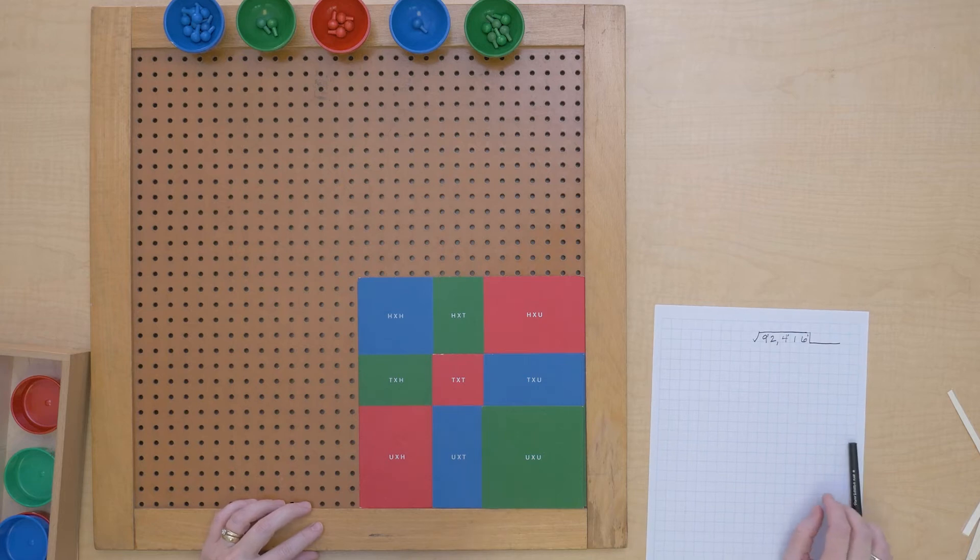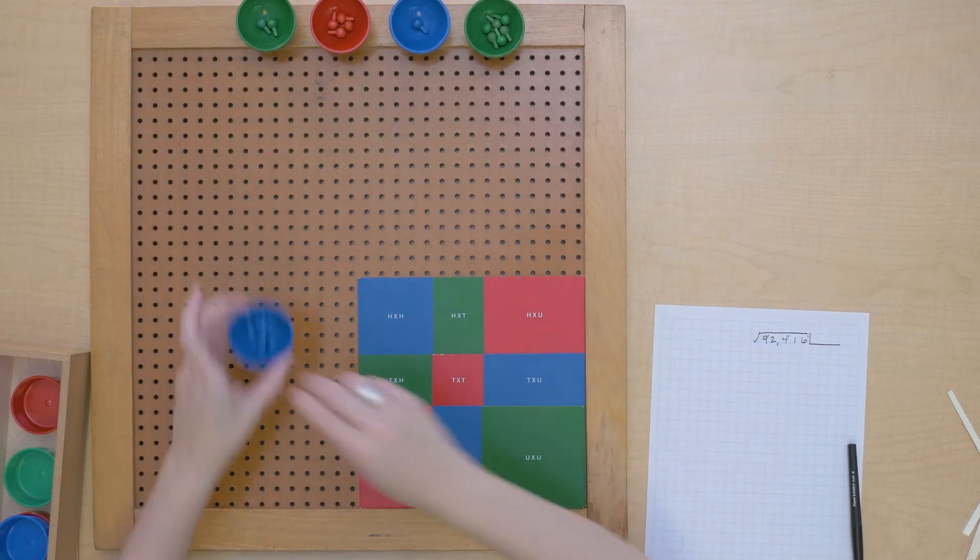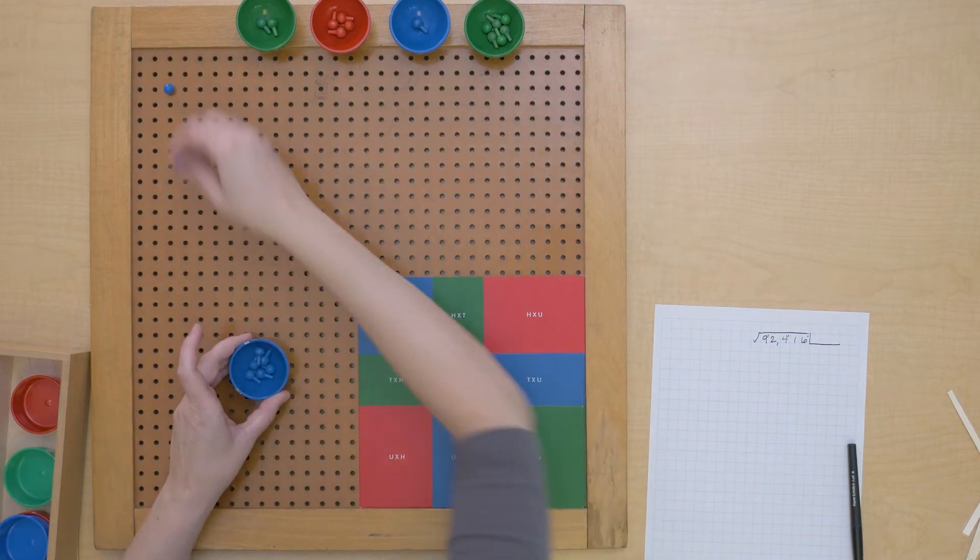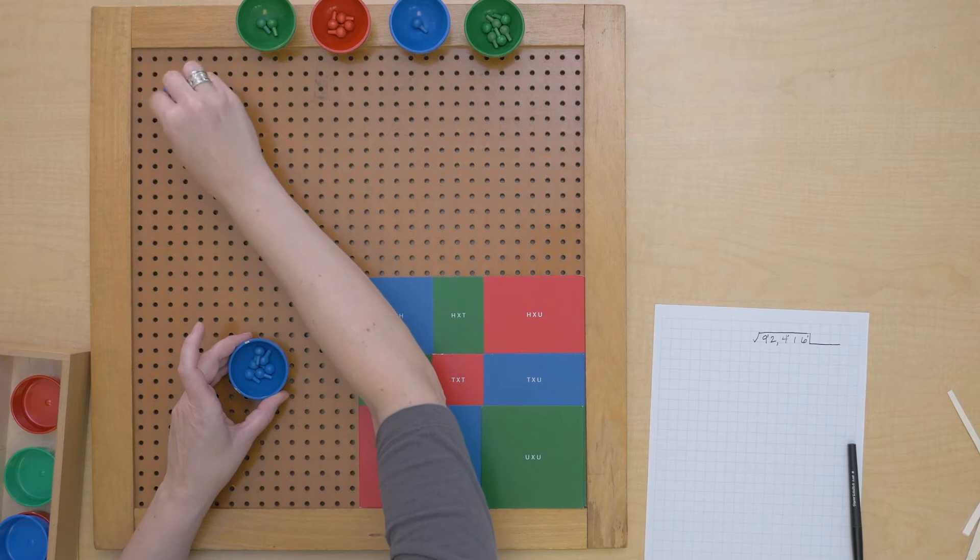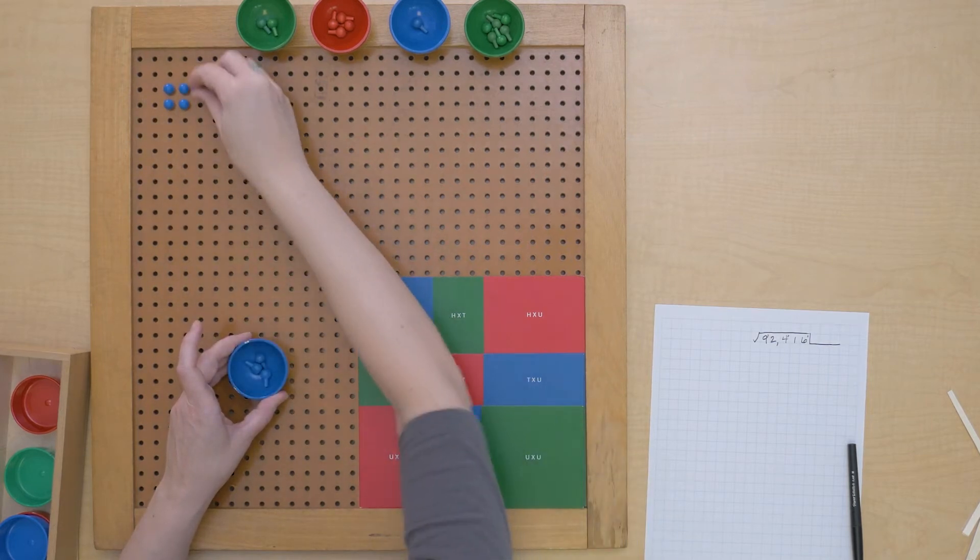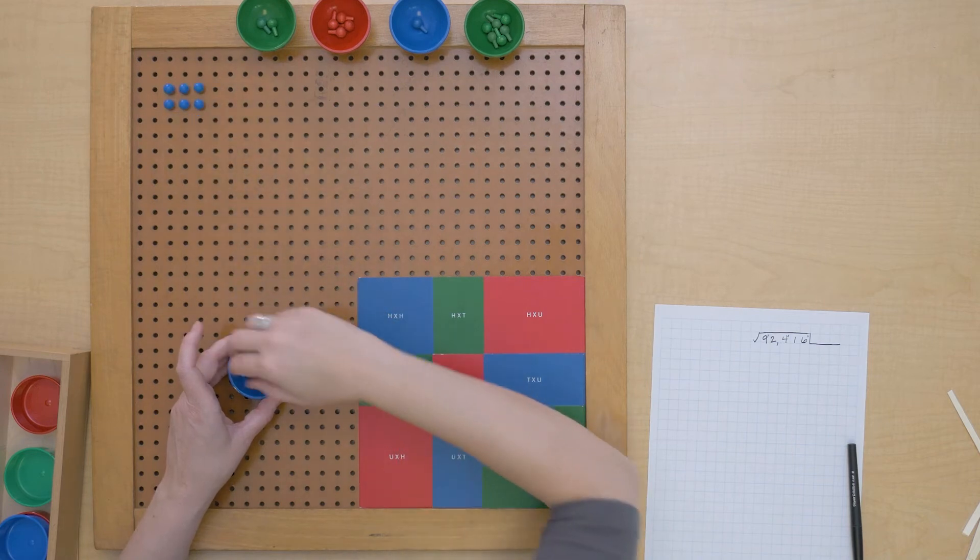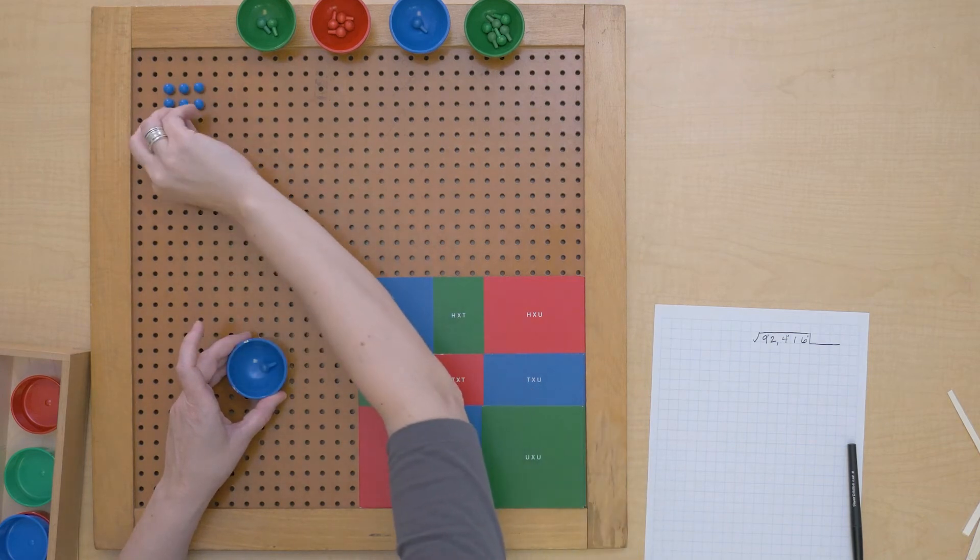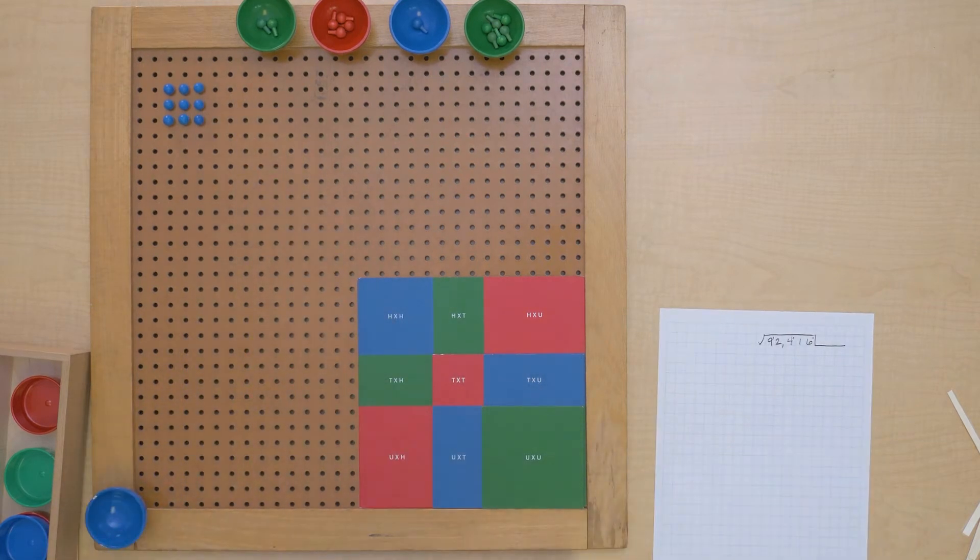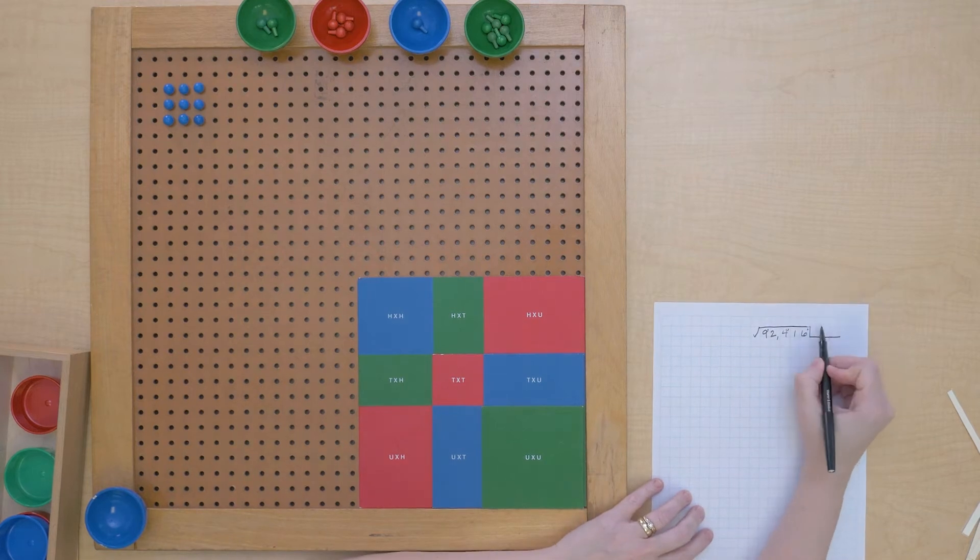Alright, let's do this square root. We're going to first look at our first period, nine ten-thousands, and build our square. So we know that the first digit of our root is going to be three.